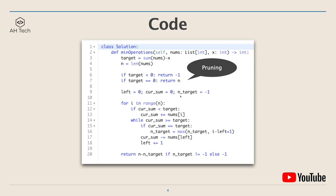Next we set up the left pointer, the current sum, and n_target — the size of the target subarray — initialized to negative one. Then is the two pointers algorithm: use a for loop and update the sliding window on the go. At the end we return n minus n_target, because n_target is the size of the target subarray and the number of elements to remove is n minus n_target. If n_target is still negative one, return negative one.